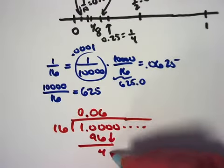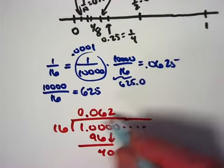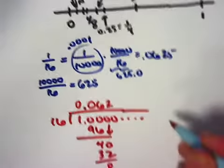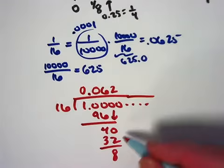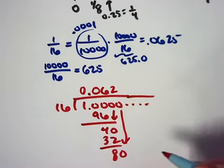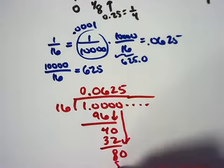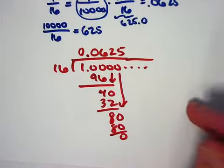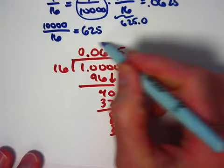Then I'd bring down that zero. Sixteen goes into forty twice. Two times sixteen is thirty-two. Subtract to get eight. Bring down this zero, write it as eighty there. Sixteen goes into eighty five times with a remainder of zero, and that means you can stop. So there's a long division justification of why one-sixteenth is the same as 0.0625.